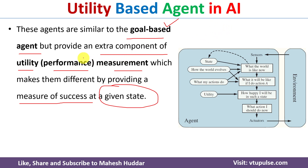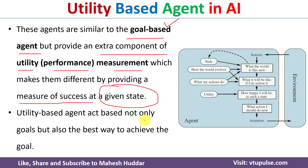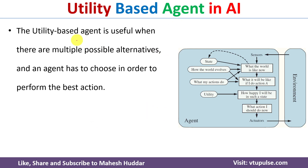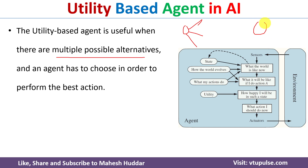But in a utility based agent, we will select a path which will lead us to the goal, and along with that we will select the best path — that means the one which will lead us to the goal with minimum cost. The utility based agent is useful when there are multiple possible alternatives. For example, you are present in a particular state with multiple options, and in a goal based agent we simply select an option which will lead us to the goal.